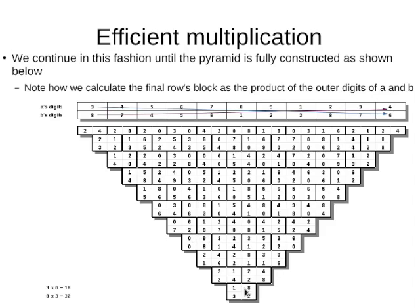Finally, when we get to the top of the pyramid, we multiply the outer digits. Three times six gives me eighteen, and eight times four gives me thirty-two — for this top row, the final block of the pyramid.